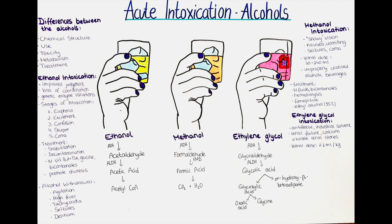The third stage is confusion: as blood alcohol concentration continues to rise, the person may experience confusion, slurred speech, impaired memory, and slowed reaction time and reflexes, increasing the risk of accidents. The fourth stage is stupor: the person may become unresponsive or barely conscious, with slow and shallow breathing and risk of choking or dangerous drop in body temperature. The fifth stage is coma: in severe cases, the person may enter a coma or experience respiratory failure, which can be life-threatening. Other toxic symptoms include hypoglycemia, lactic acidosis, metabolic acidosis, hypothermia and arrhythmias.